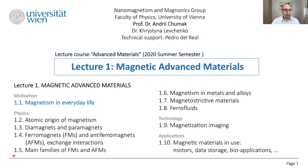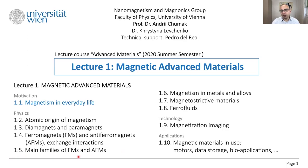Then we will switch to the main families of insulating ferro-, antiferro-, and ferrimagnetic materials like garnets, spinels, and perovskites.